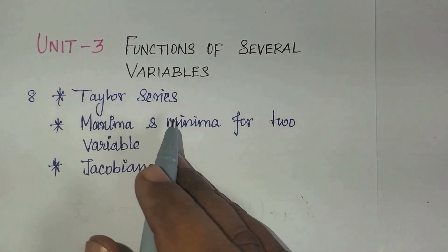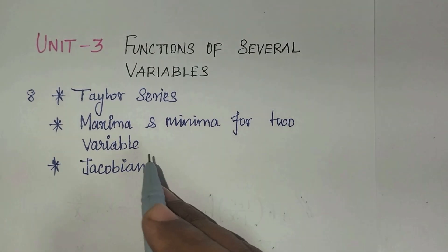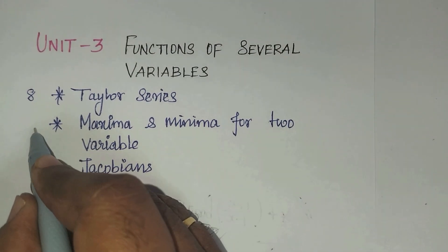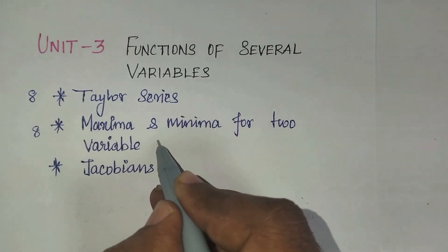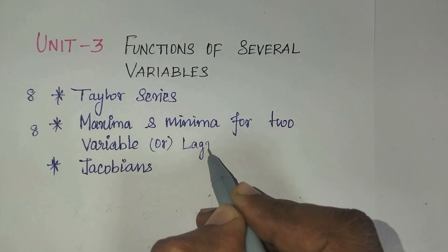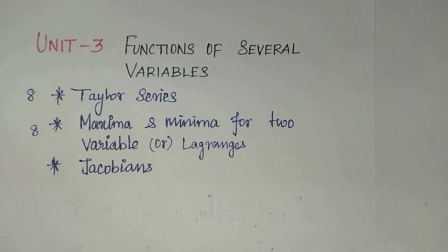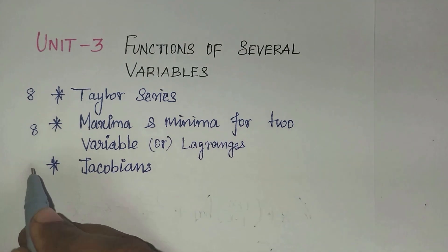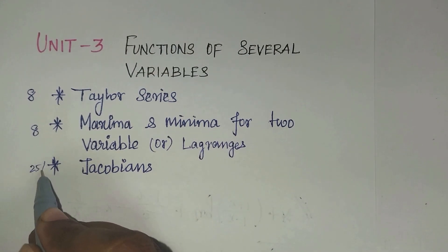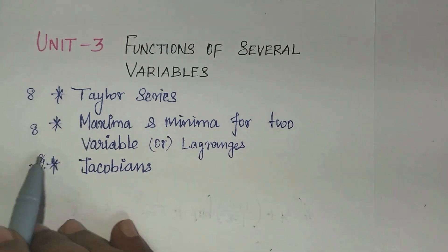And maxima and minima for two variables - in Unit 2 you had one variable, but here it's two variables. From this, there's half a chance for one 8-mark question. Here you will have one more topic: Lagrange's method and Jacobians. From these both, you will get one 8-mark question definitely.